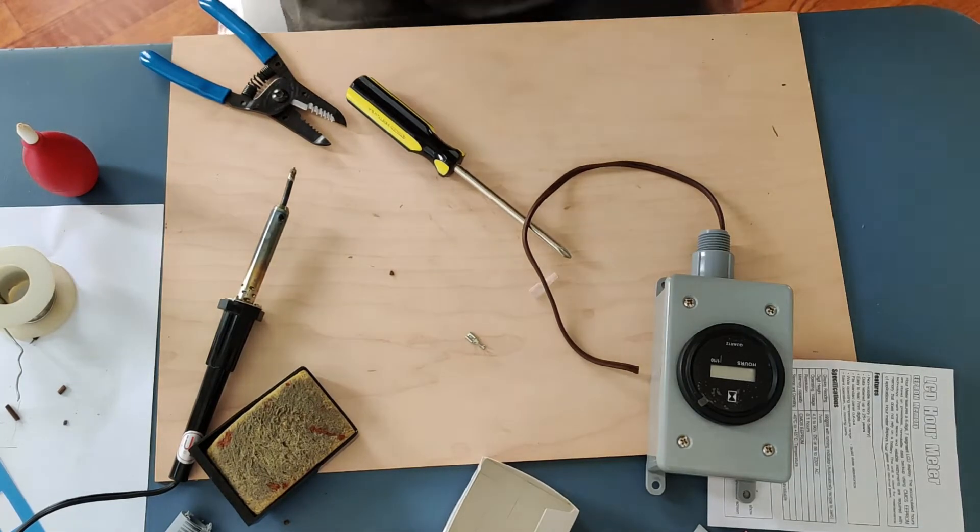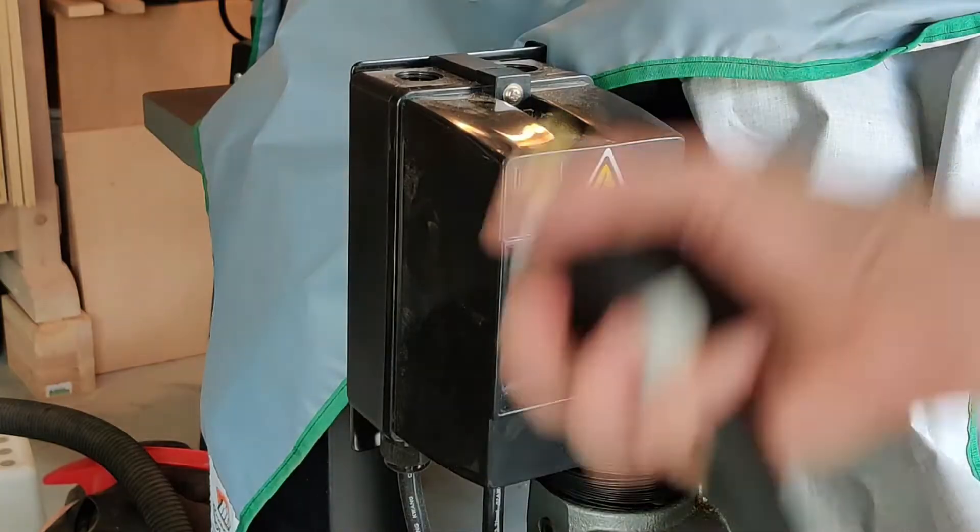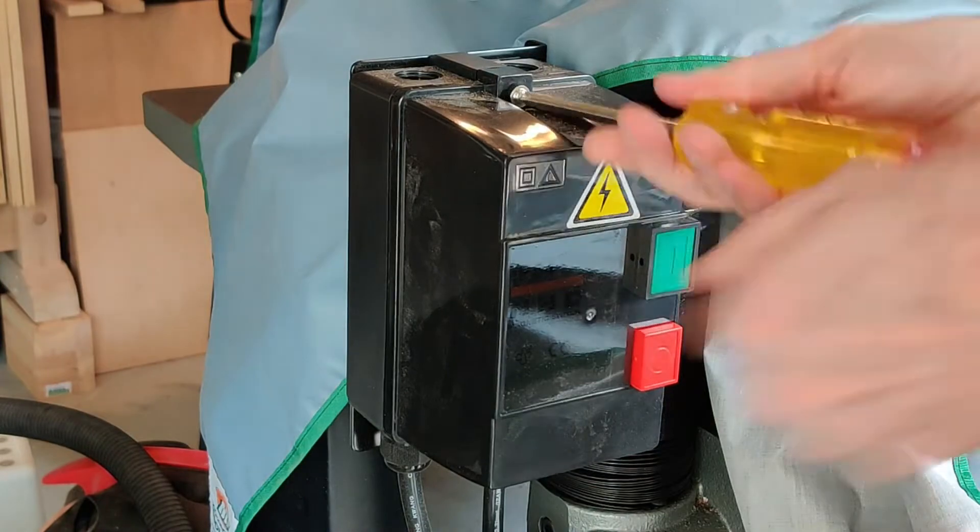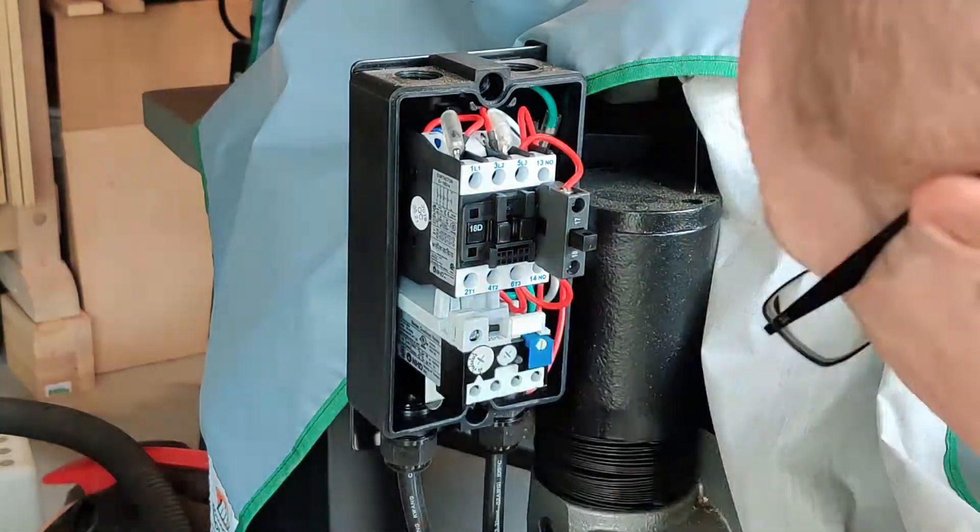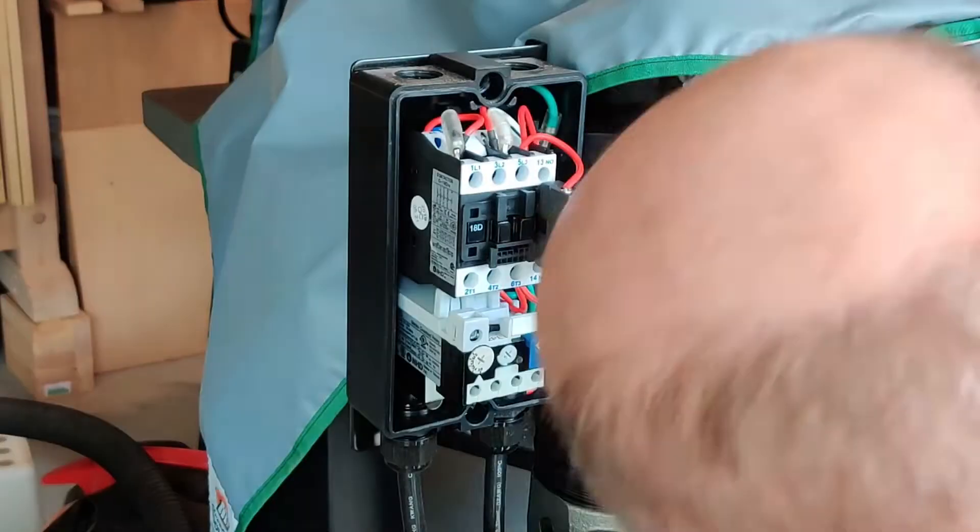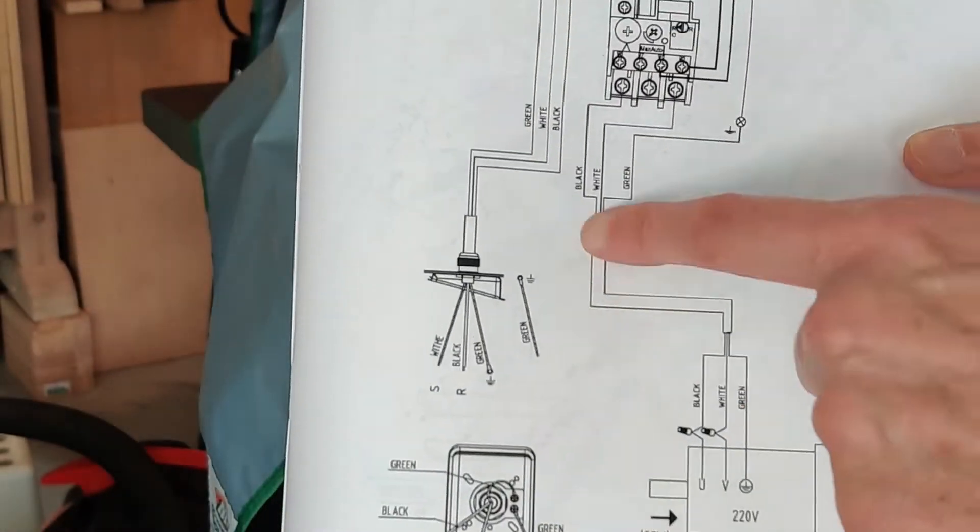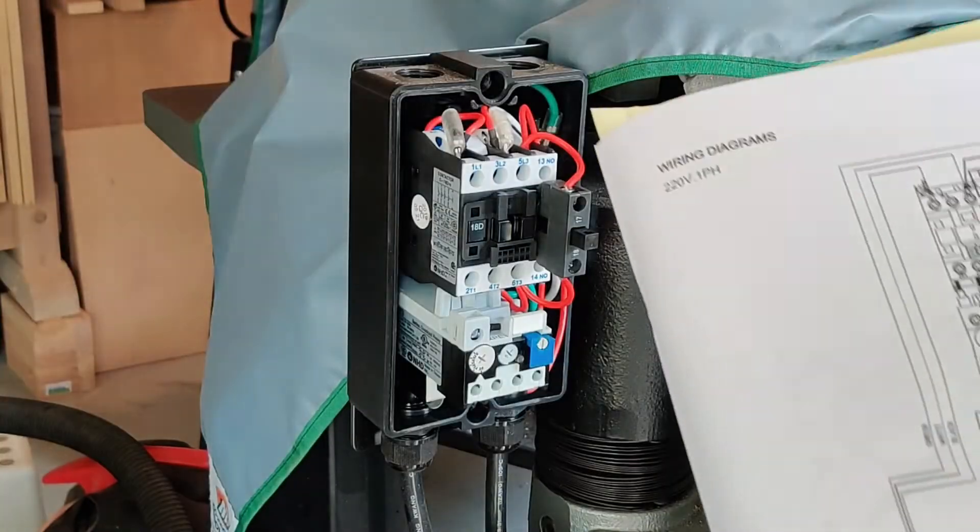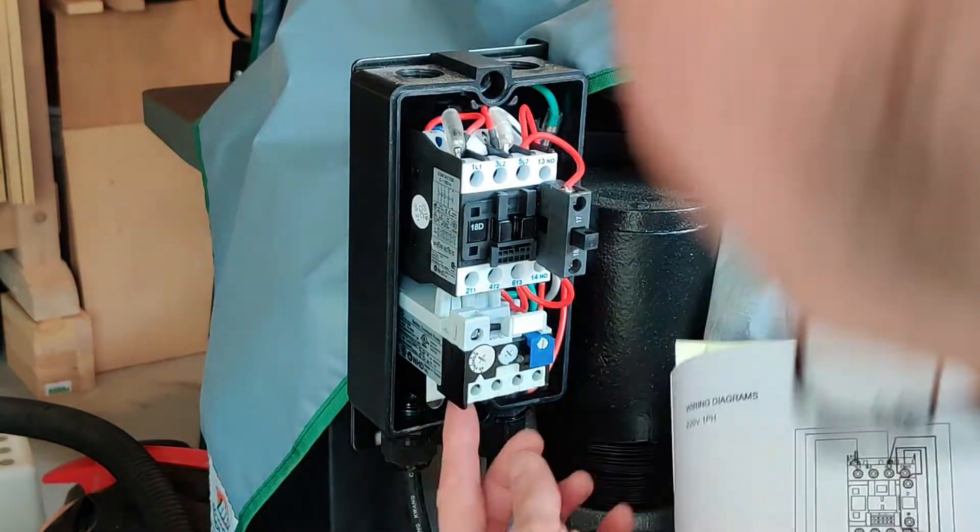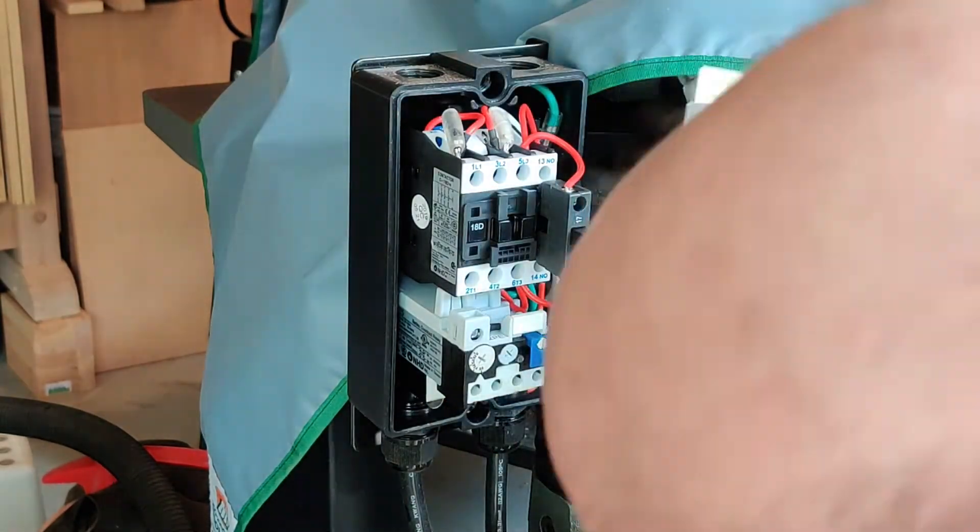Here's the planer. This box is typical on some Laguna, at least one Grizzly, a couple of Powertechs, and a lot of Jet planers. So if you have one of these boxes, you can follow the exact same procedures I did.